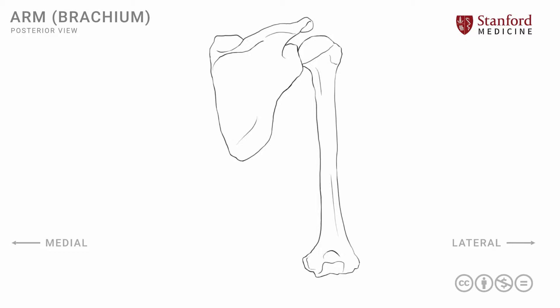There's one muscle in the arm, which is the triceps. It has three heads as the name suggests — tri meaning three and ceps meaning heads. The lateral head of the triceps is seen here, situated on the lateral side of the posterior humerus.